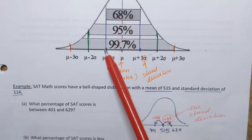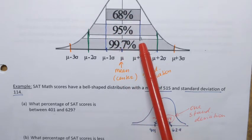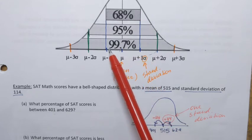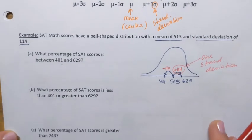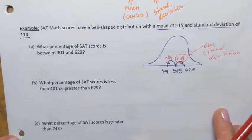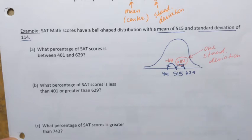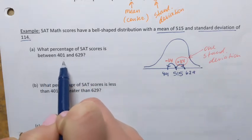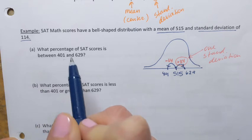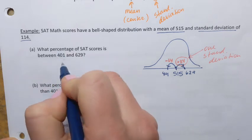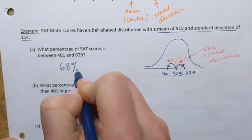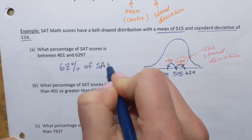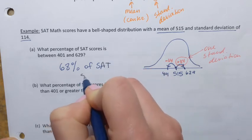68% within one standard deviation away — plus one standard deviation and minus one standard deviation. So the answer is 68%. What percentage of SAT scores is between 401 and 629? 68% of SAT scores.